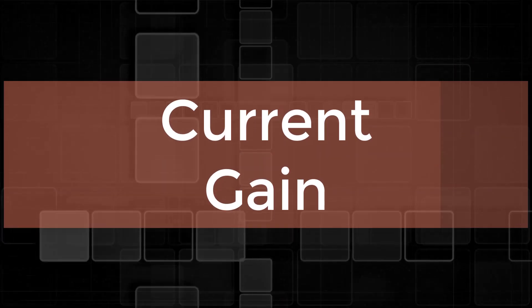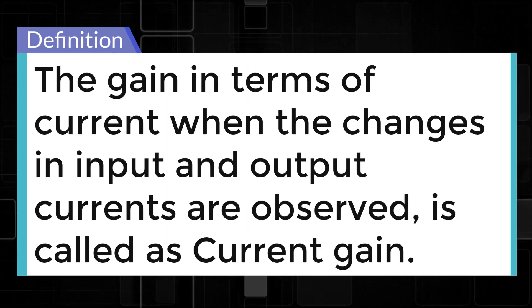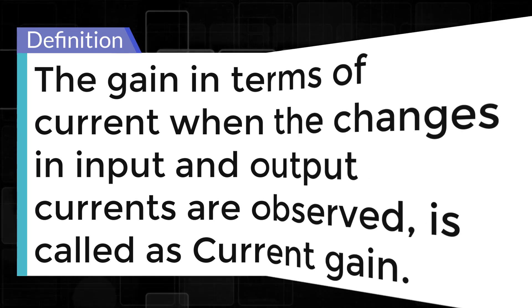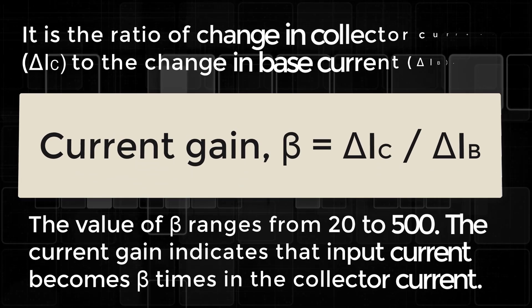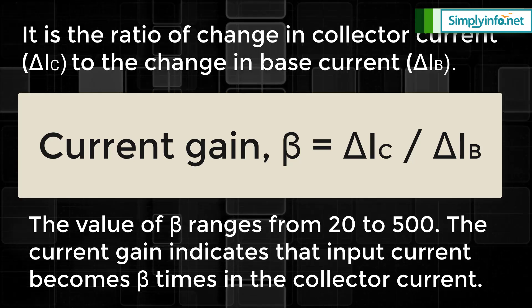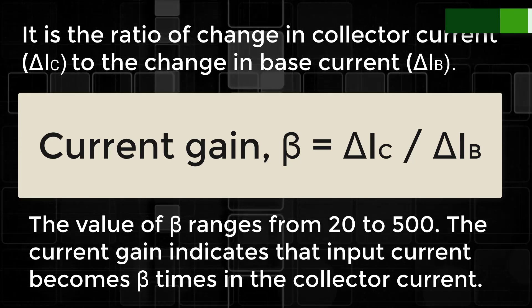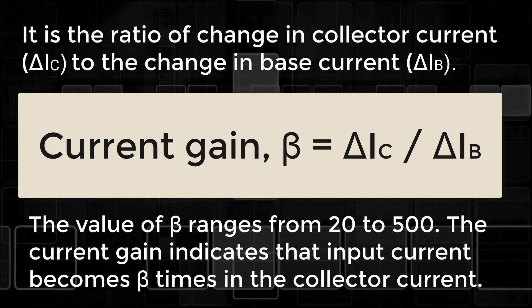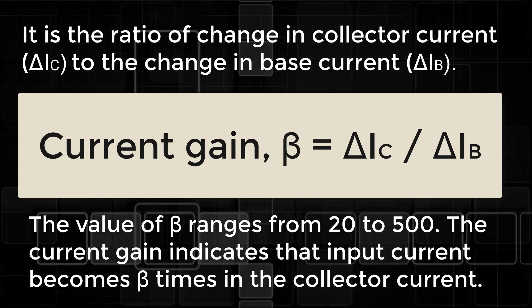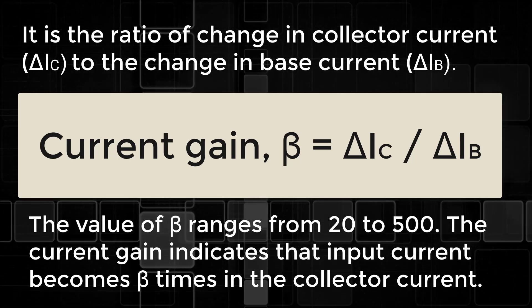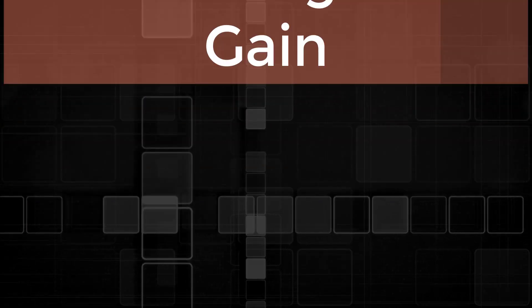Current gain: The gain in terms of current when the changes in input and output currents are observed is called current gain. It is the ratio of change in collector current ΔIC to the change in base current ΔIB. Current gain β = ΔIC / ΔIB. The value of beta ranges from 20 to 500. The current gain indicates that input current becomes beta times in the collector current.